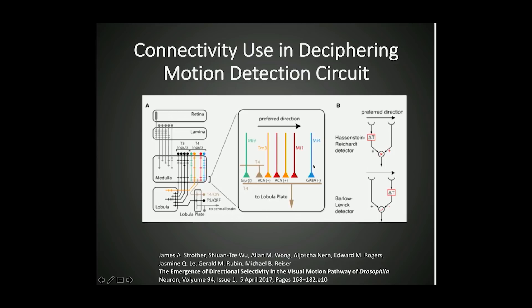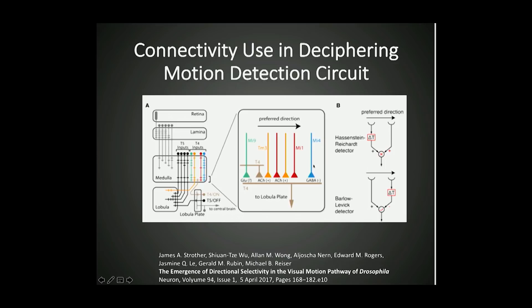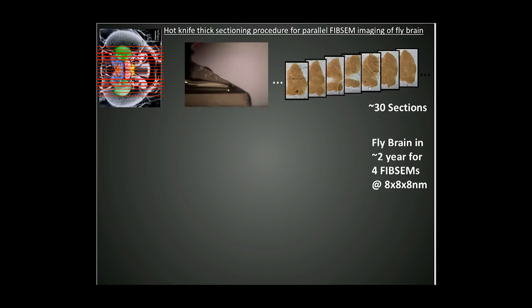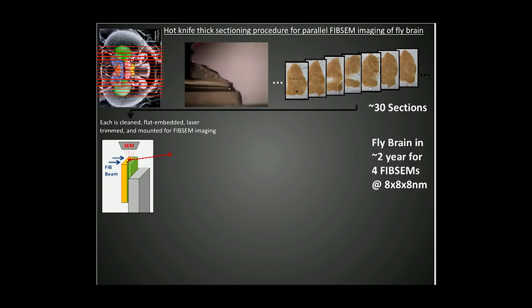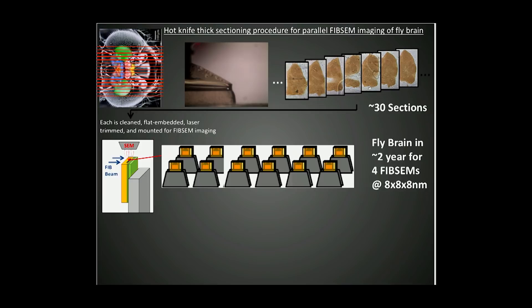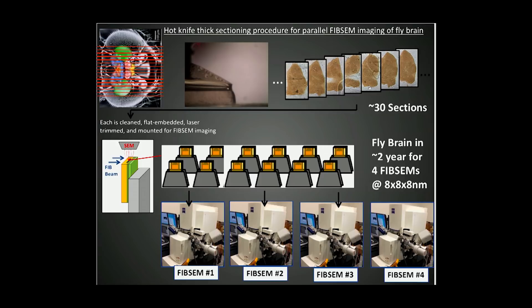So far we still haven't gotten to the full fly brain. We reverted to another technique called hot knife sectioning: you chop the fly brain up like a loaf of bread into about 30 pieces, each about 20 micrometers thick, put them on a little laminated surface — about 30 tabs — and feed them into a bunch of machines. This puts us in the range of reducing the eight FIB-SEM year effort down to a more reasonable time.